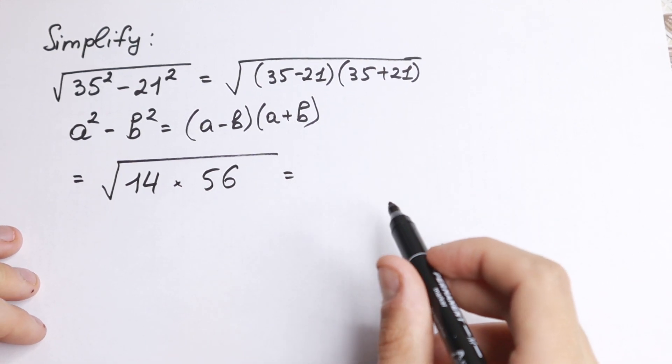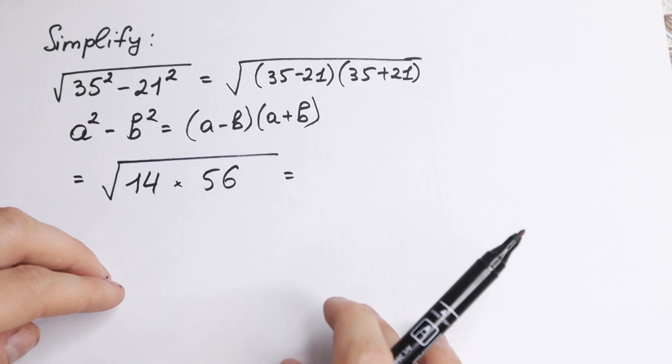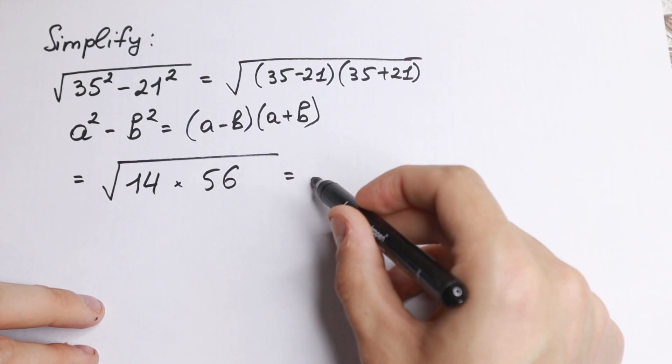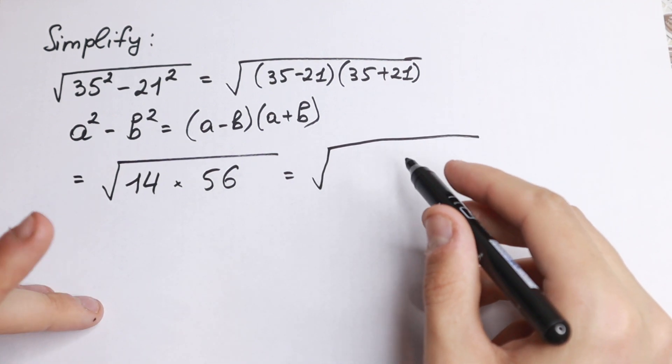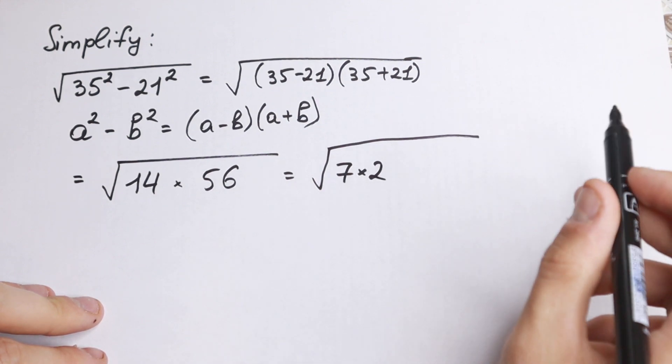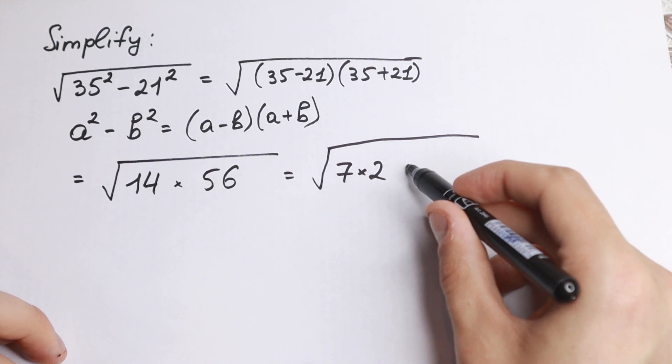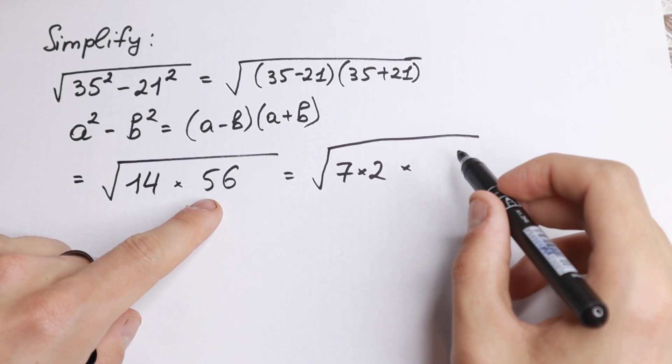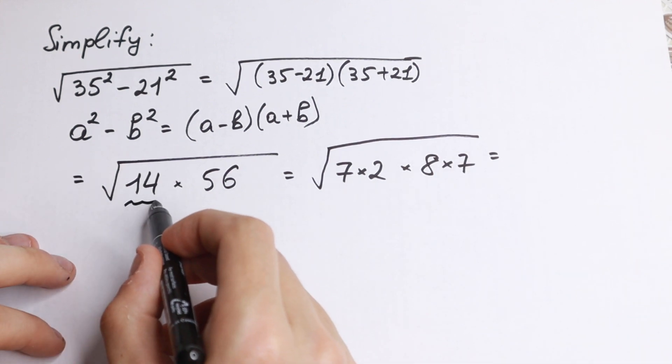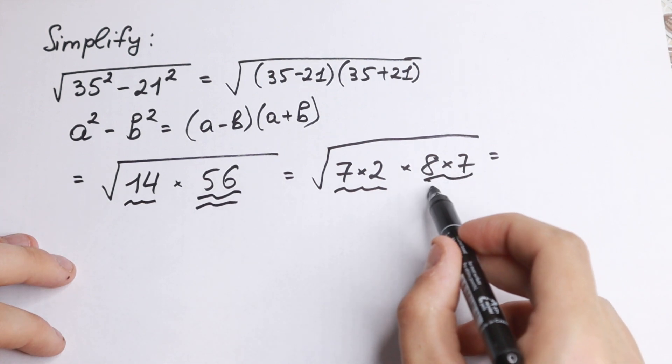How can we find this answer? How can we simplify without multiplying these elements? We know that 14 is a good number because we can write it only one way - we can express it as 7 times 2. Just write 14 as 7 times 2, and 56 as 8 times 7.